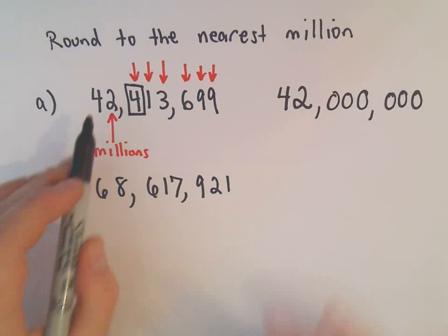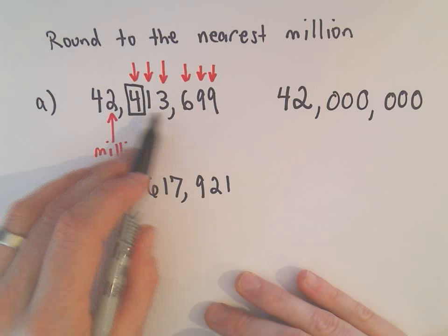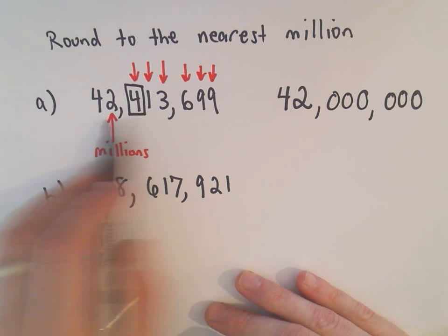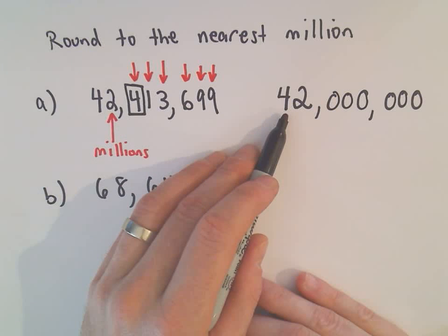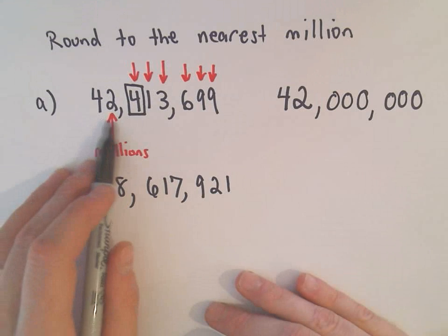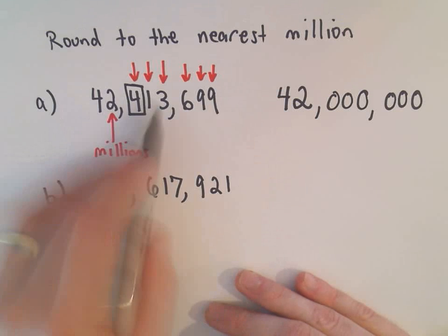So if you've got $42,413,699, it says you've really got closer to $42 million than $43 million. So we're going to round down.